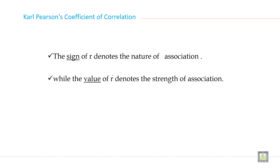Carl Pearson coefficient of correlation - the sign of r denotes the nature of association. Remember, sign of r denotes the nature of association, while the value of r denotes the strength of association. We will discuss these both points in much detail in the next coming slides.